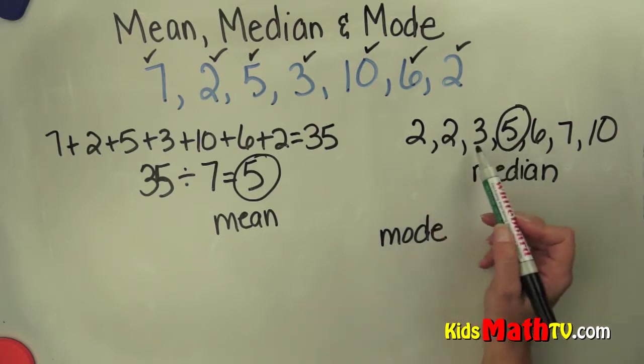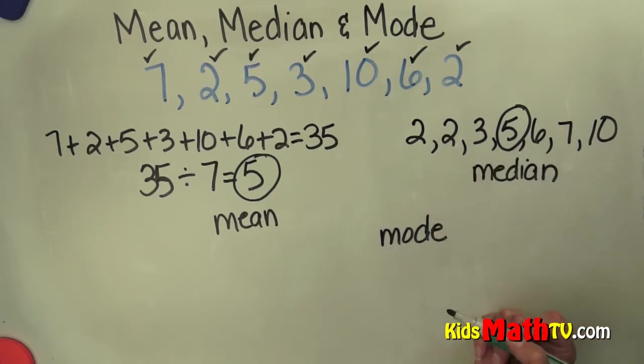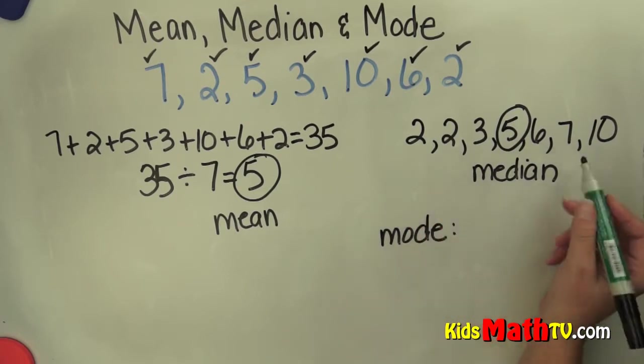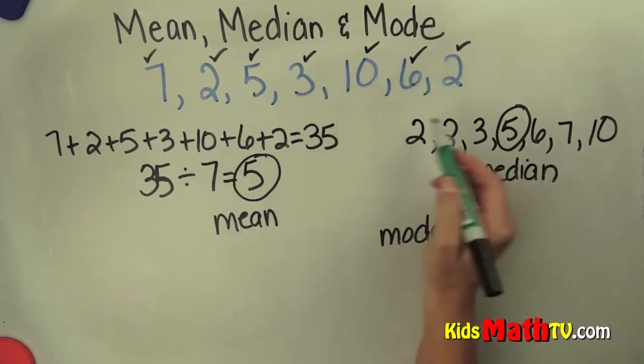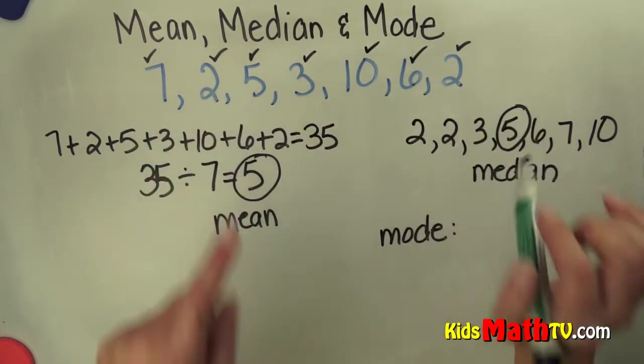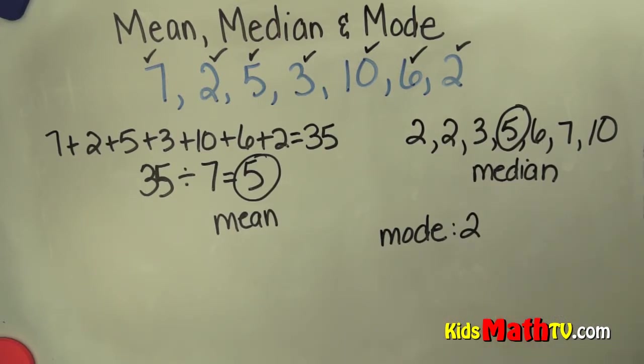That is the 2. The 2 is here twice, and all the other numbers are only here once. So the mode of this set of numbers is 2, because it happens the most often. That is the end of our lesson on mean, median, and mode.